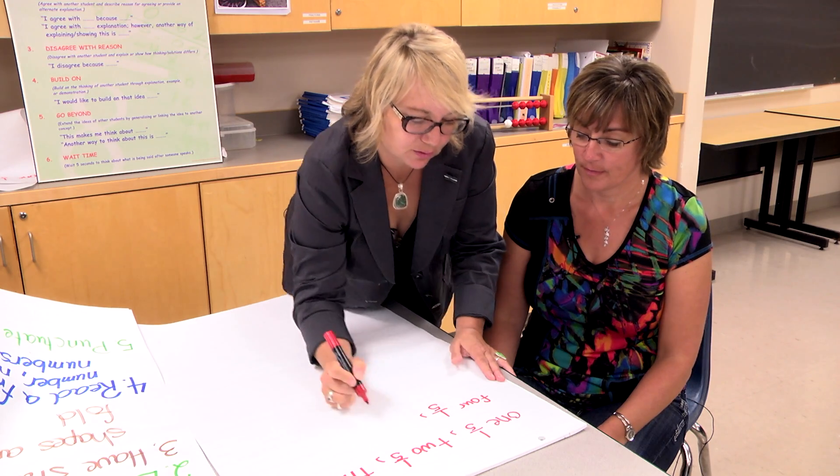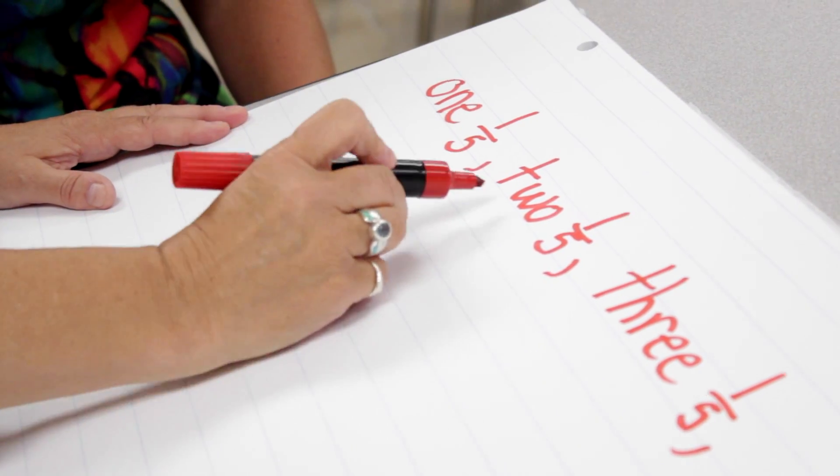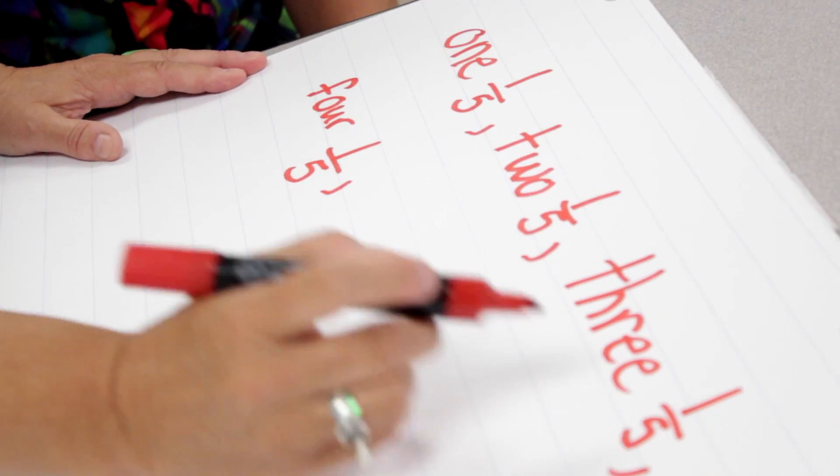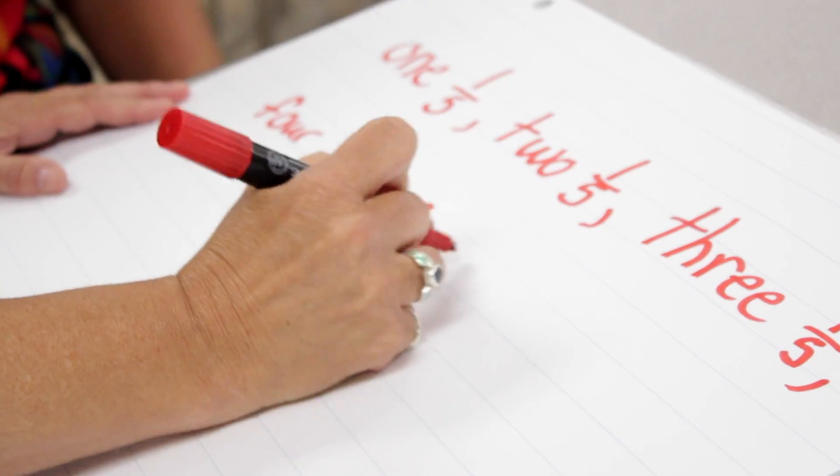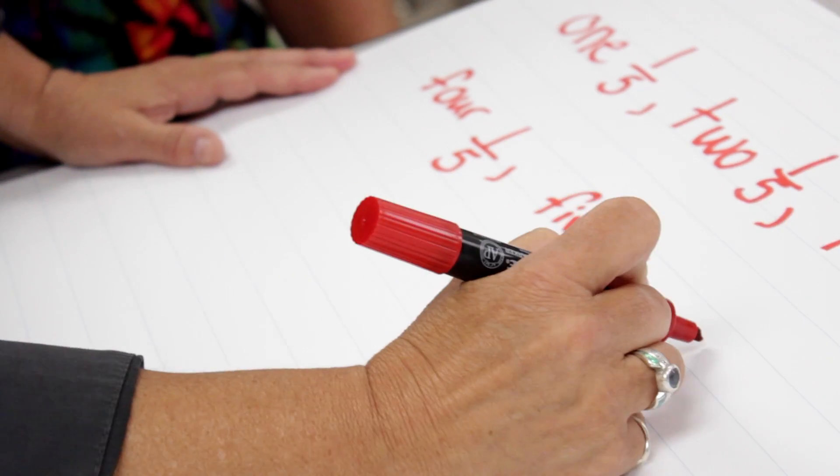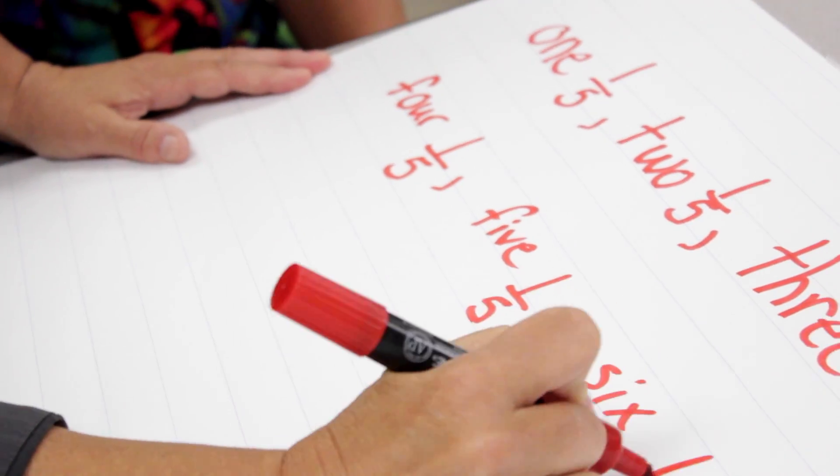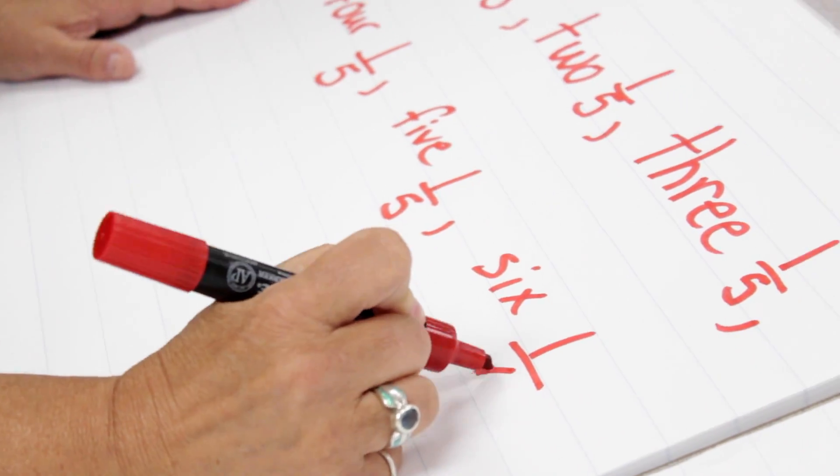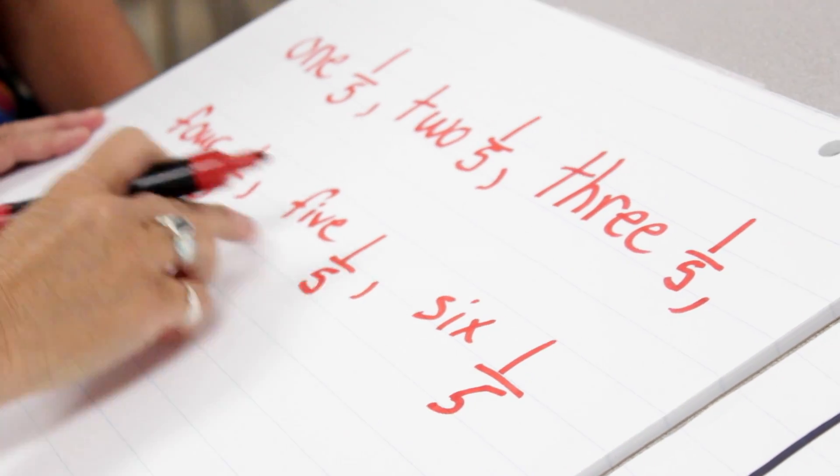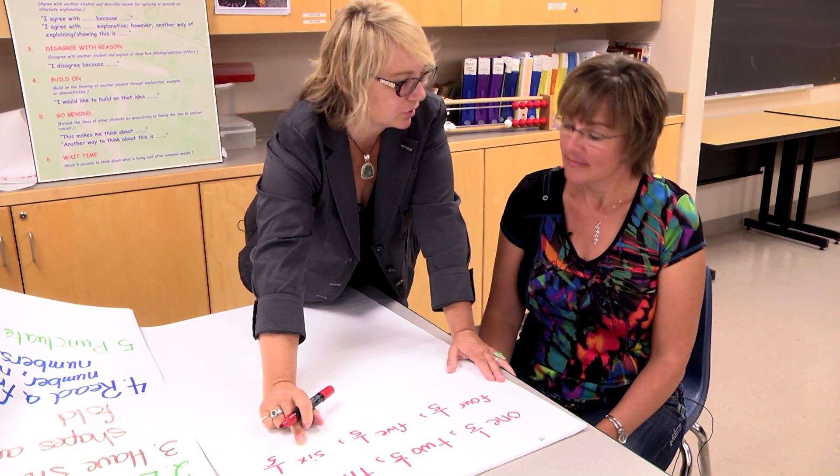When I'm counting these unit fractions I'm saying 1 one-fifth, 2 one-fifths, 3 one-fifths, 4 one-fifths, 5 one-fifths, 6 one-fifths and it really allows me to go over the whole number easily because I'm thinking about the unit fraction.